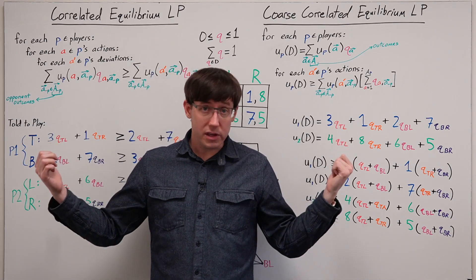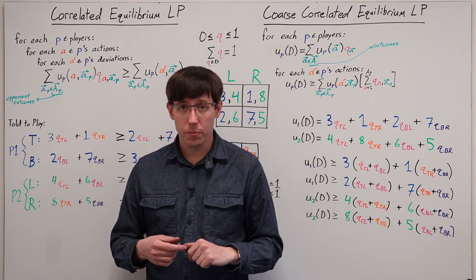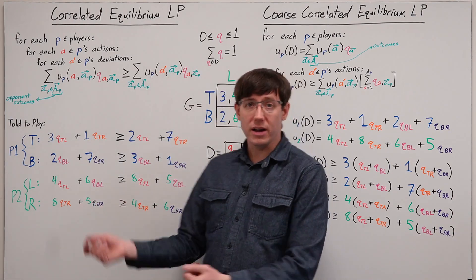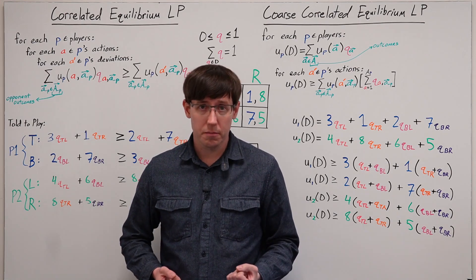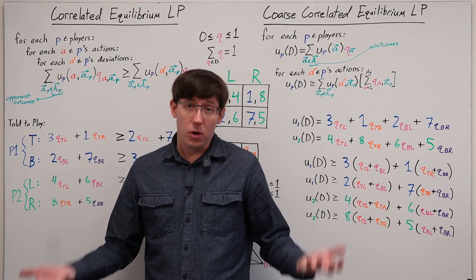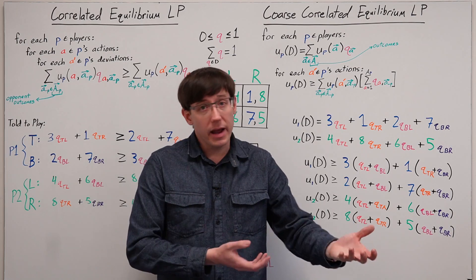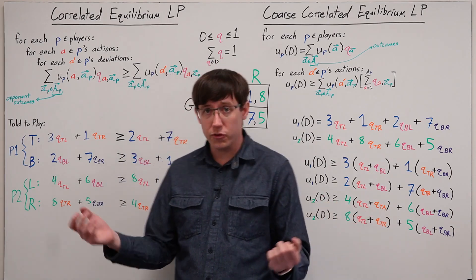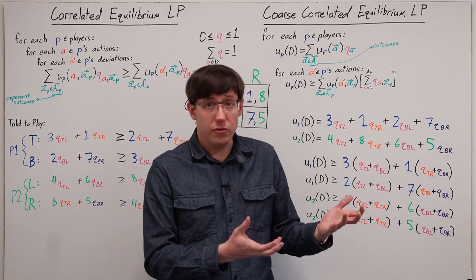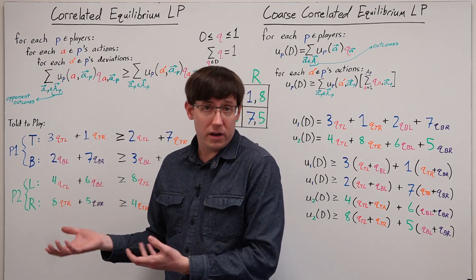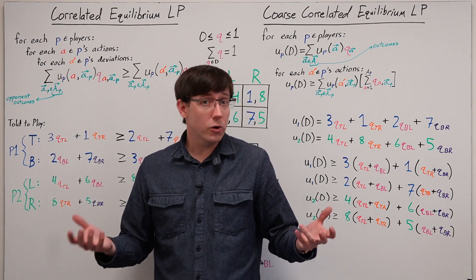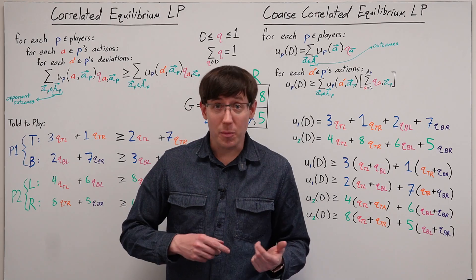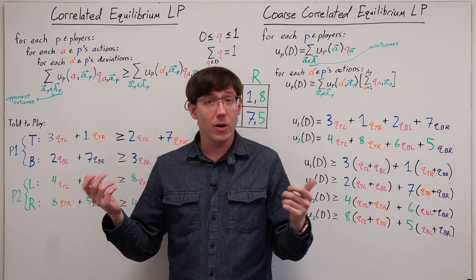Of note, in both of these linear programs we have not specified an objective — all we need is to find some point that satisfies all of the corresponding inequalities. But when we run a linear programming solver, we can generally, at no extra computational cost, provide an objective function to maximize or minimize. So we will often specify some objective function to give us the best correlated equilibrium according to some criterion. I encourage you to look back at the criteria we used to aggregate preferences over multiple decision-makers and think about which of those could be expressed as a linear function to maximize as part of our linear programs.